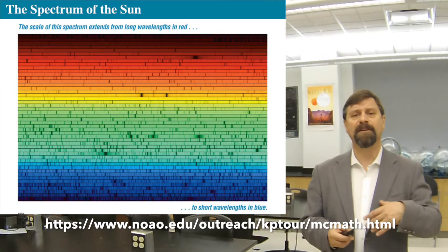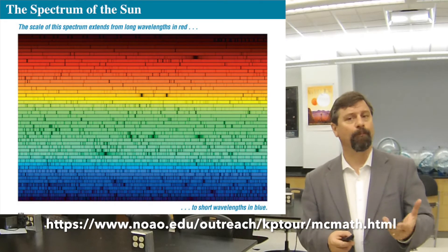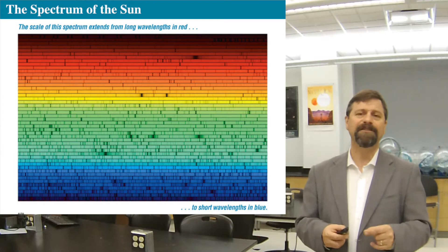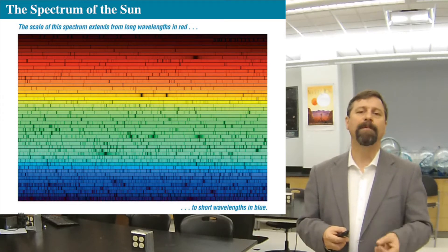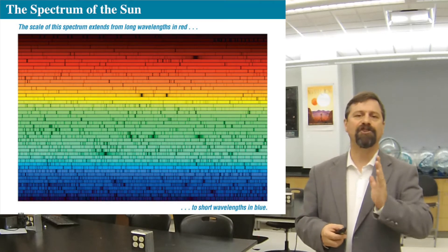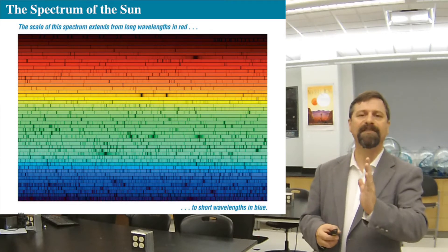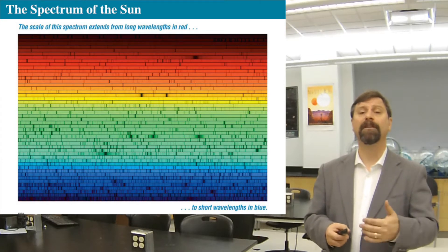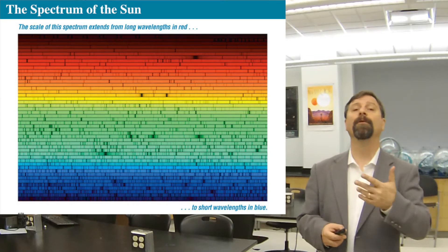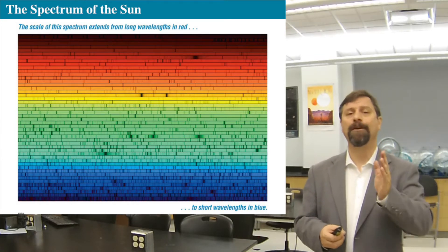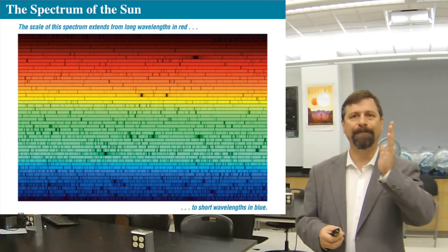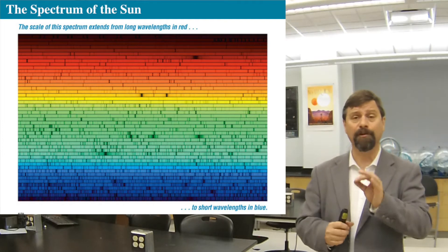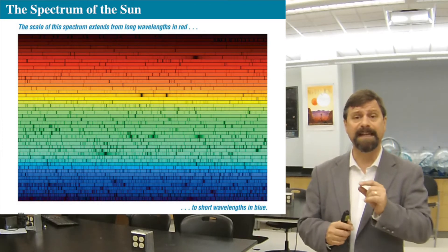This rainbow that we always see actually has some darker spots in it, and those darker spots are the shadows of the slit through which we passed the sunlight. We call them absorption lines because we make a vertical line slit through which we pass the sunlight.